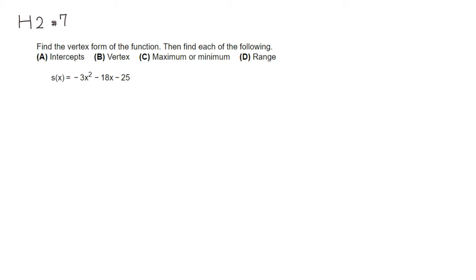The first thing I would do is pull out negative 3 from the first two terms. So negative 3 is pulled out from the first term, leaving x squared. If you pull out the negative 3 from negative 18x, you're going to have a positive 6x — basically dividing by negative 3. Then I'm going to give a little bit of room inside the parenthesis, and we still have minus 25 at the end.